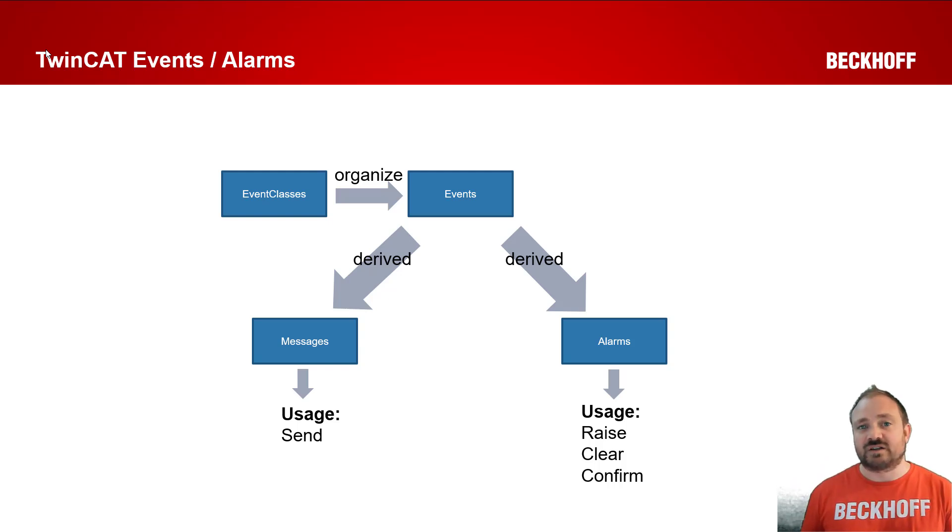The event logger is structured in such a way that it uses what it refers to as event classes. It's effectively a base class called the event class, and we then derive two child objects from that. The first is a message and the second is an alarm. The message is what we've actually been using in the trace.